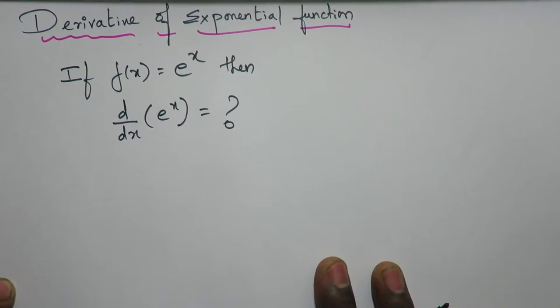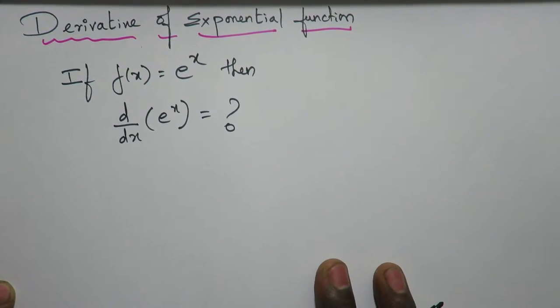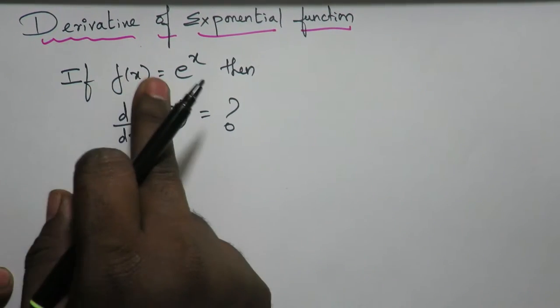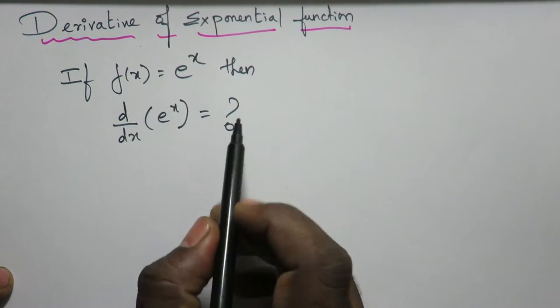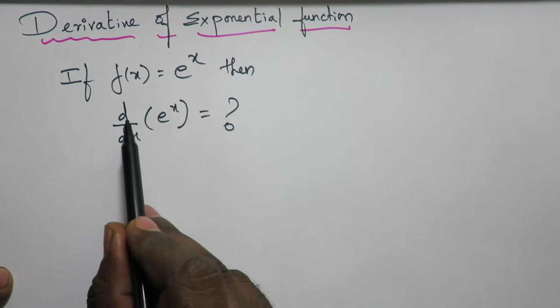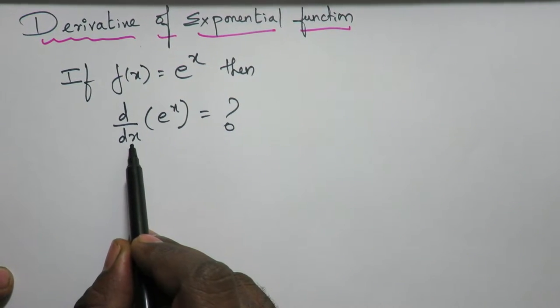Derivative of exponential function. If f(x) = e^x, then what is the differentiation of e^x with respect to x?